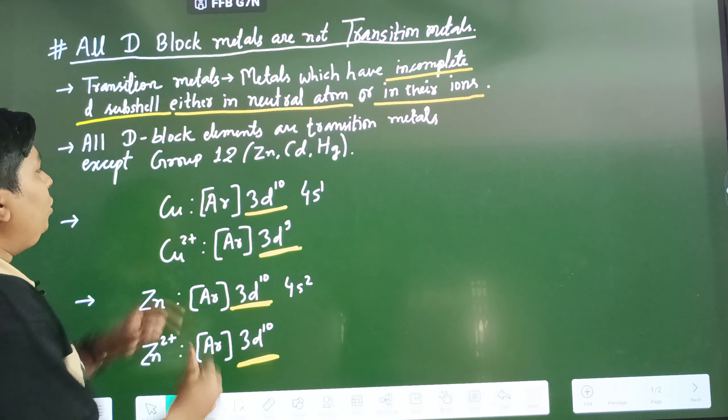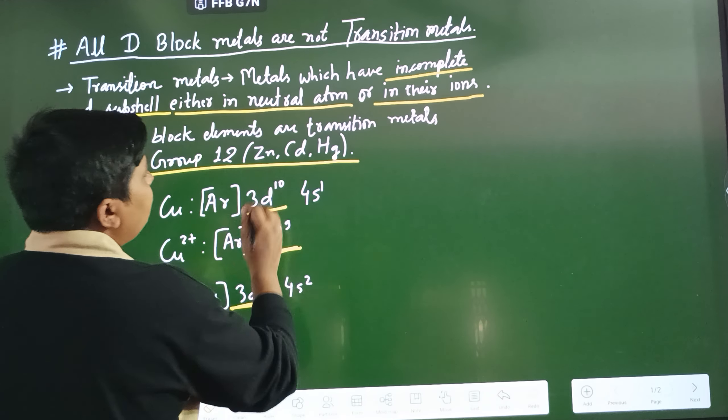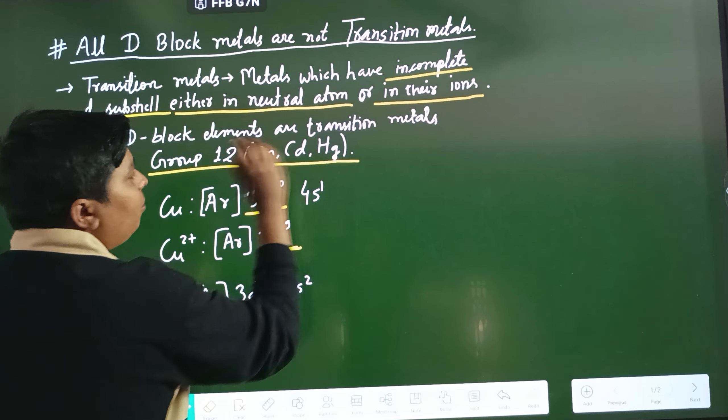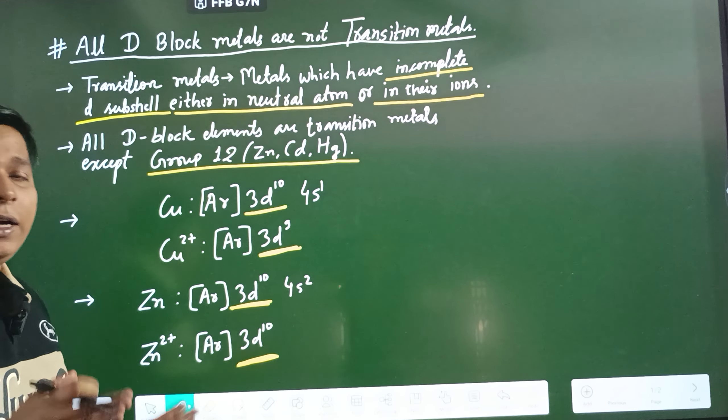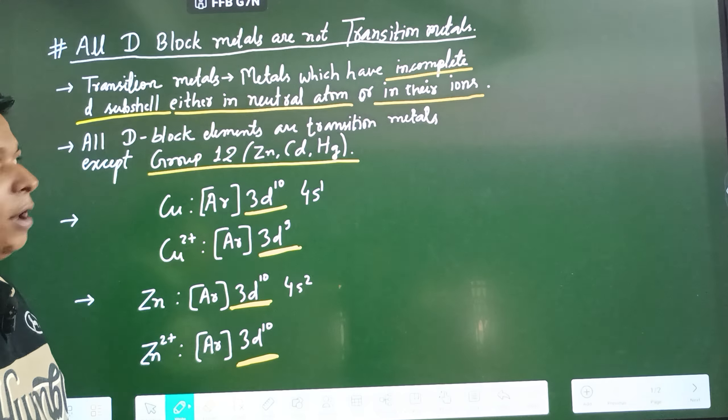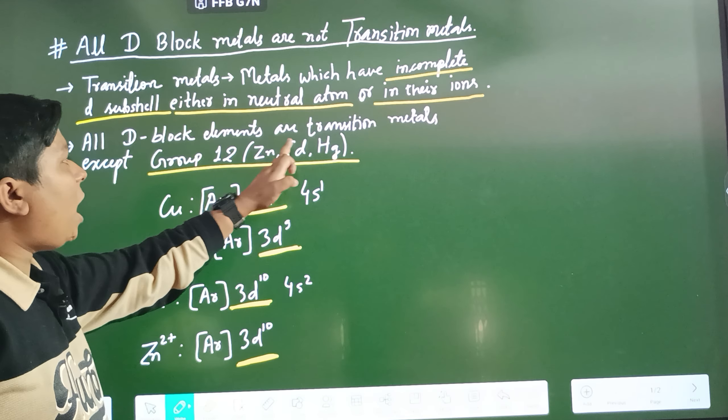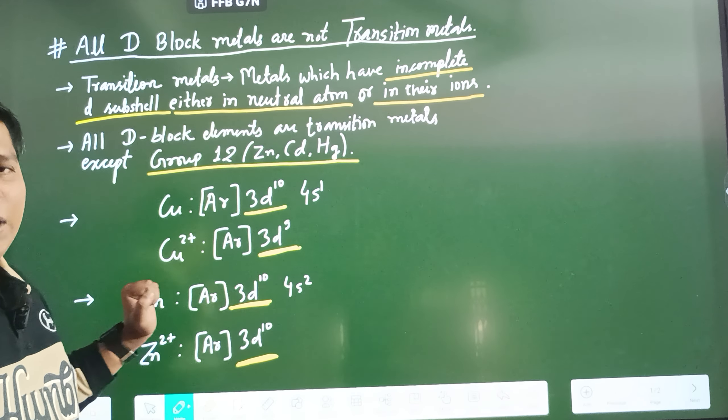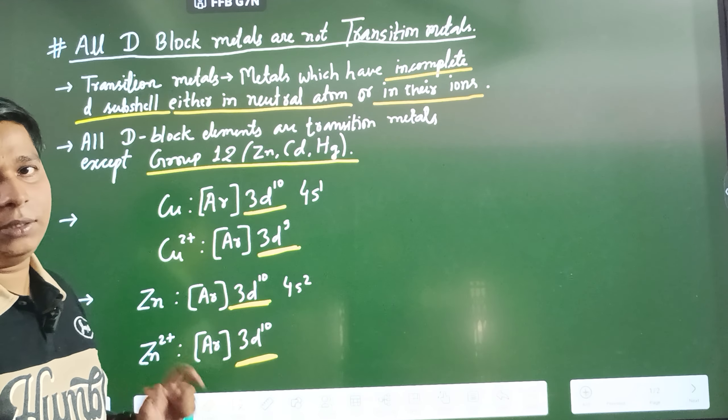So these group 12 elements, metals zinc, cadmium, and mercury, do not fulfill the criteria for the definition of transition metals. So even if these are D-block metals, these are not transition metals.